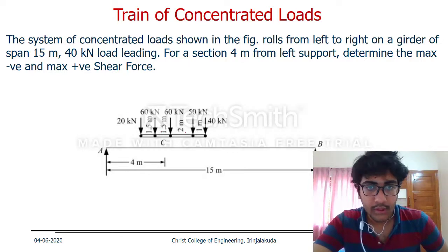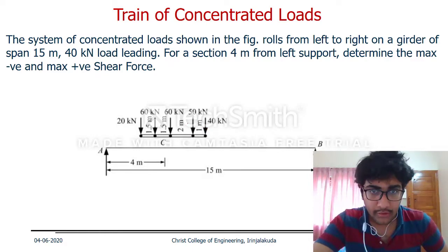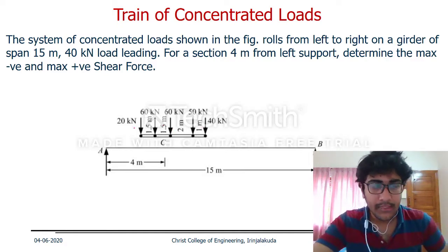The loads are: 40 kN, then 1 meter away is 50 kN, 2 meters away is 60 kN, 1 meter away is 60 kN, and 1 meter away is 120 kN. This is the train of concentrated loads.